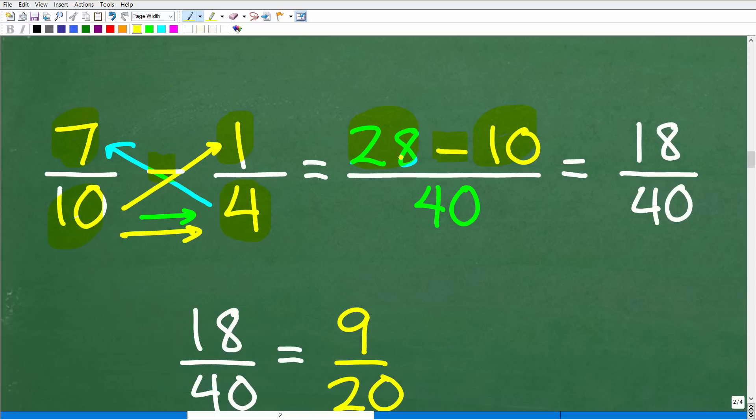Let's clean this up. We have 28 minus 10 is 18 over 40. What's awesome about this is we didn't have to think about the LCD. We didn't do anything. We just started just doing stuff. Boom, boom, boom, boom. So we got 18 over 40, but we're not done.